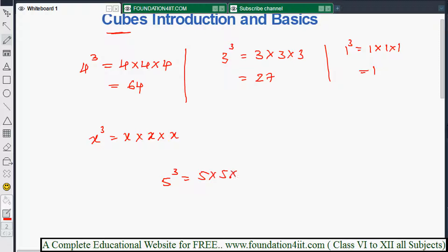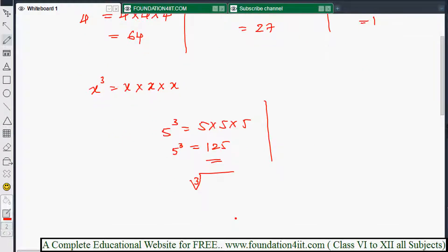5 × 5 × 5 equals 125, so 5 cube is 125. When we write the cube root of 125 using the cube root symbol, it equals 5. It's just the vice versa of cubing.